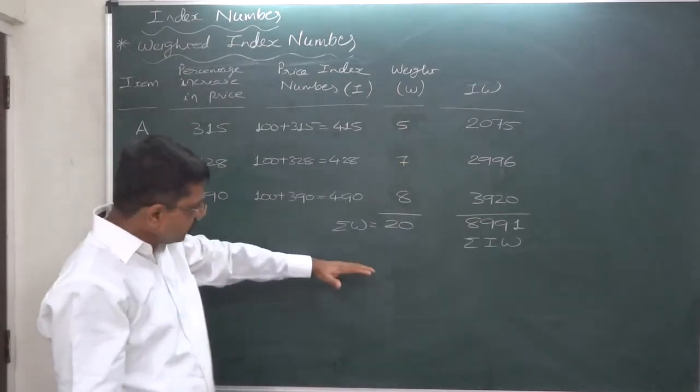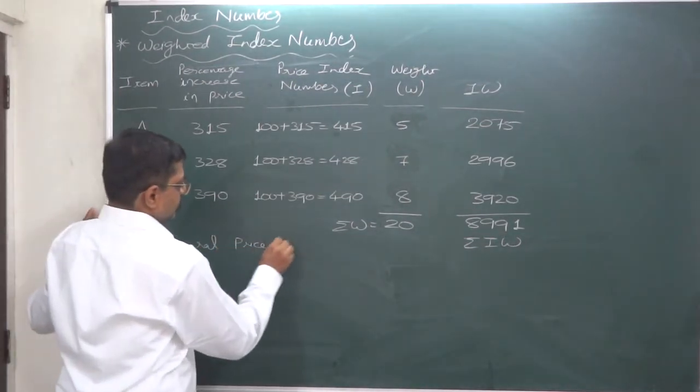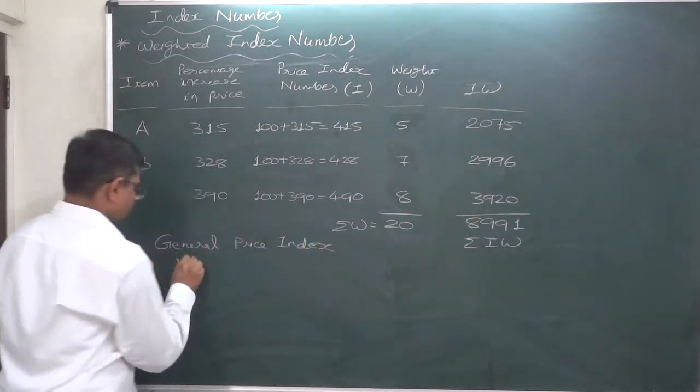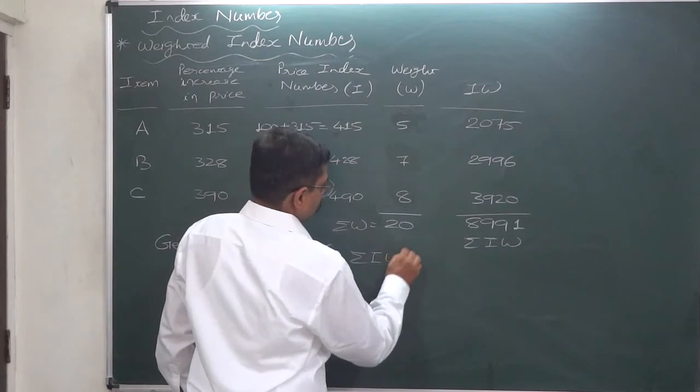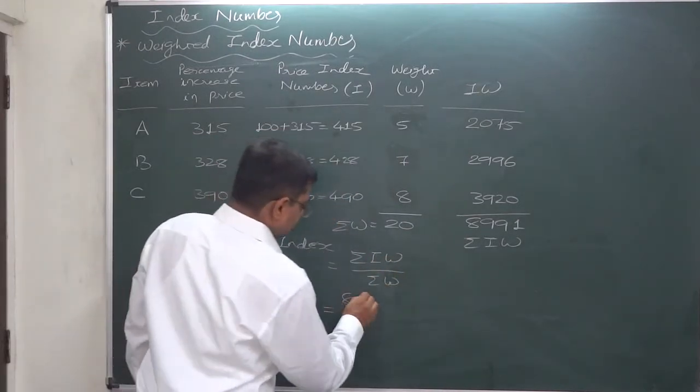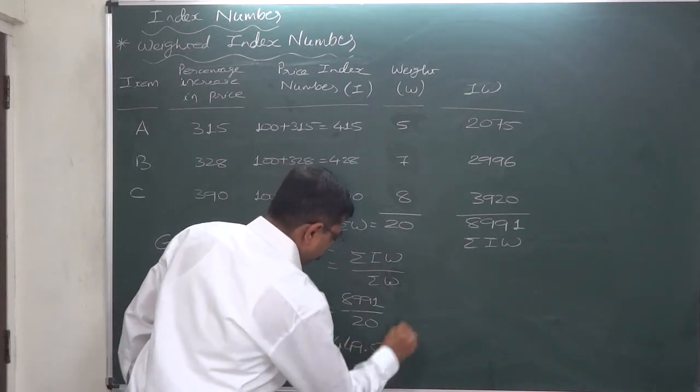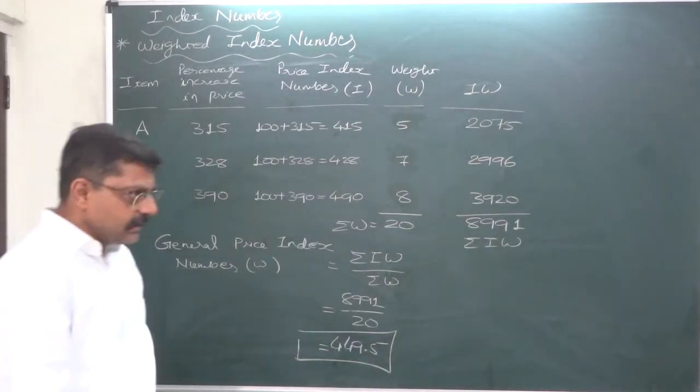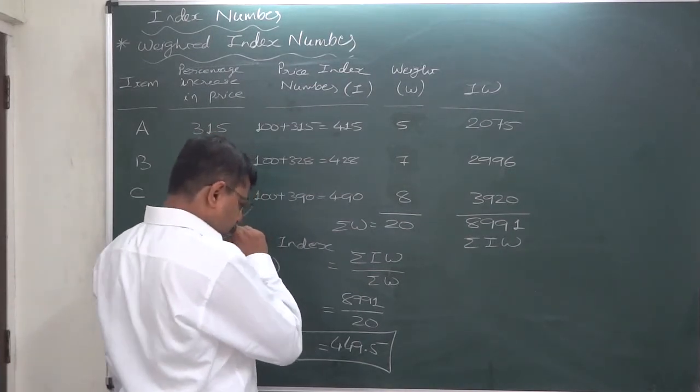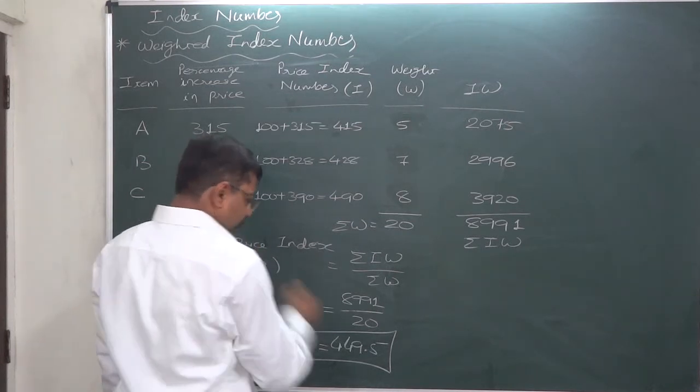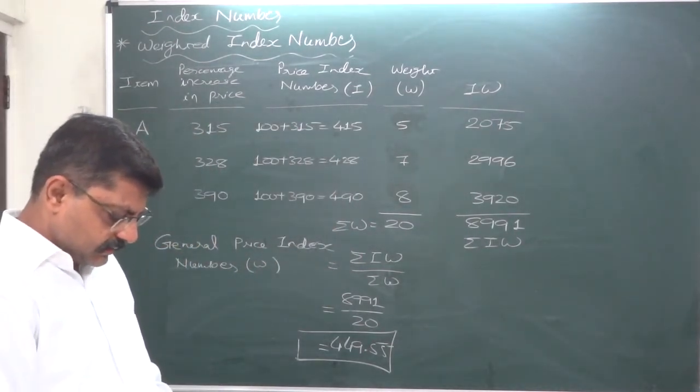So now we have both the components of the formula of weighted general price index number: sigma I_w upon sigma w. Yes, general price index number, weighted. If you don't write w, it's okay. Sigma I_w upon sigma w, that is 8991 divided by 20, so it is 449.5. Yes, 449.5. Okay, let me confirm: 8991 divided by 20, yes.